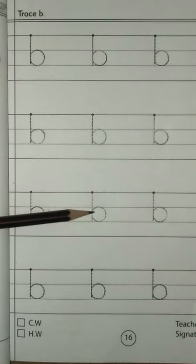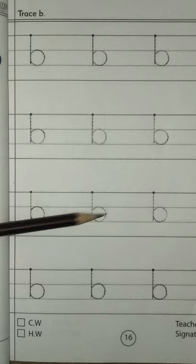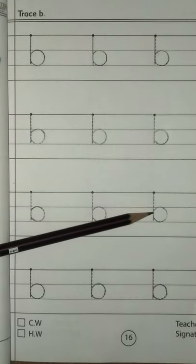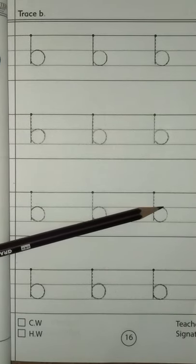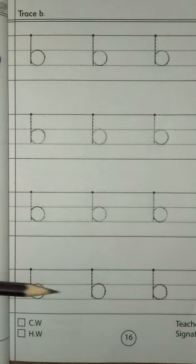Very good. B. Let's start writing. B. Come down and down. Go up and turn around. B.